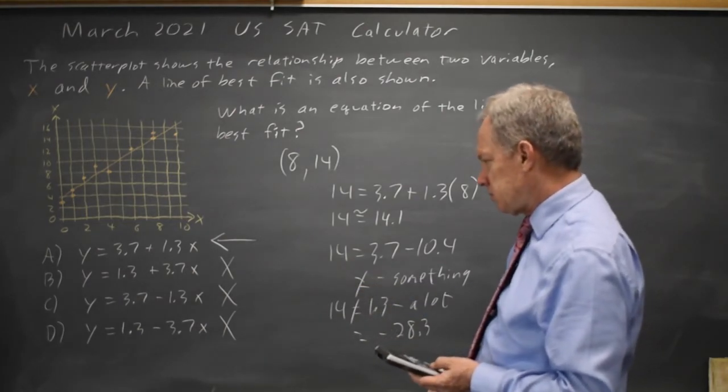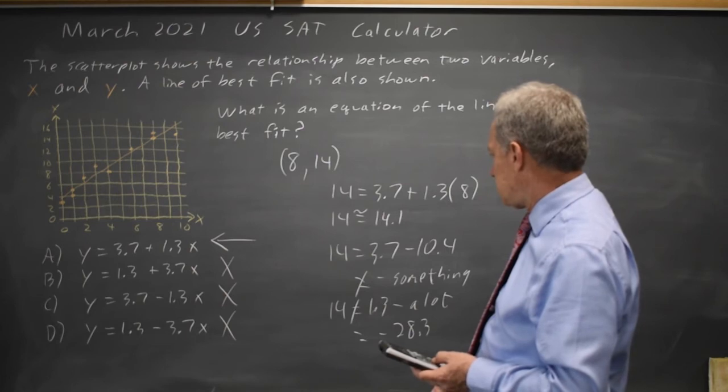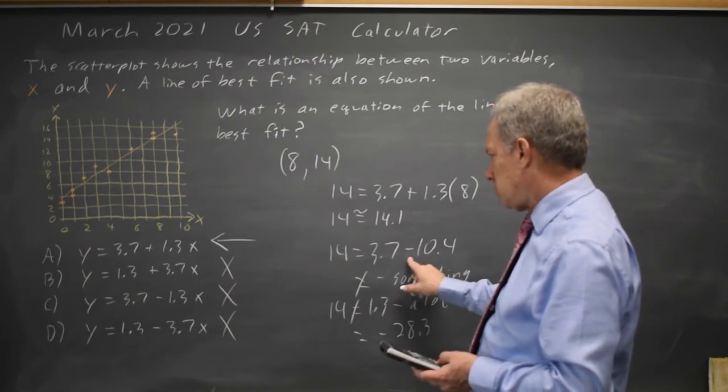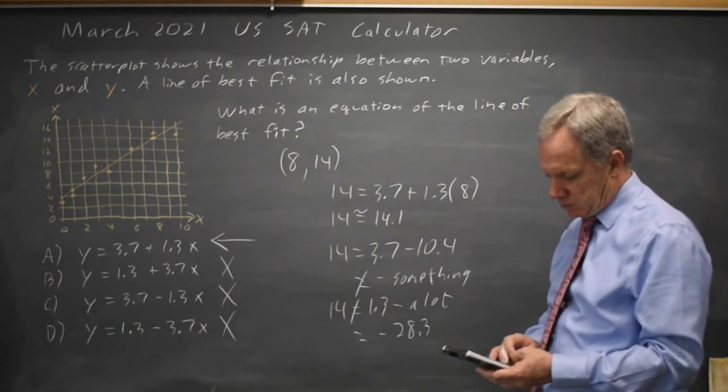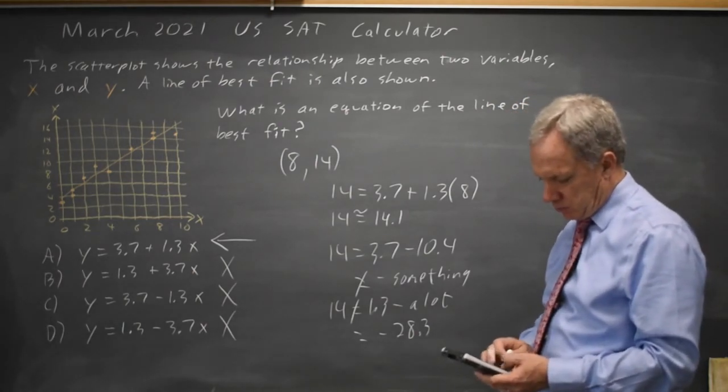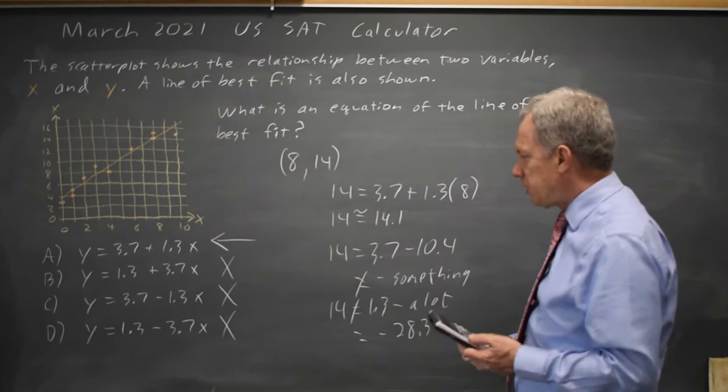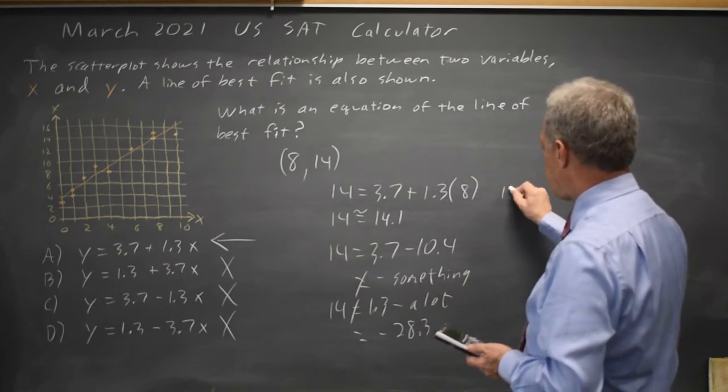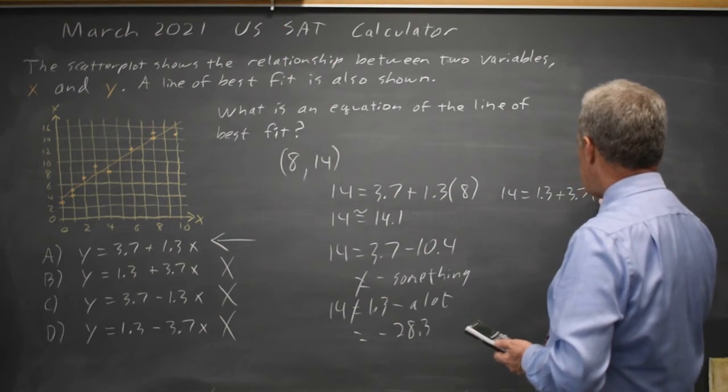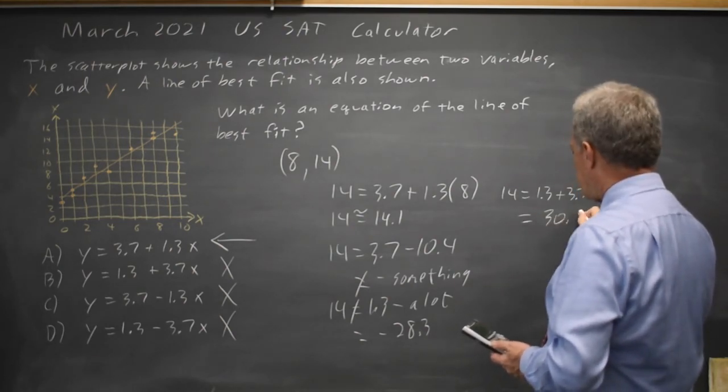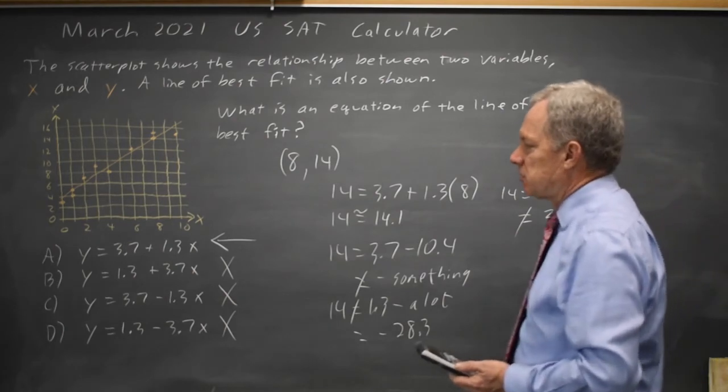And trying 1.3 plus 3.7 times 8, just to try choice B. Choice B is 14 equals 1.3 plus 3.7 times 8, and that is 30.9, and that is nowhere near close.